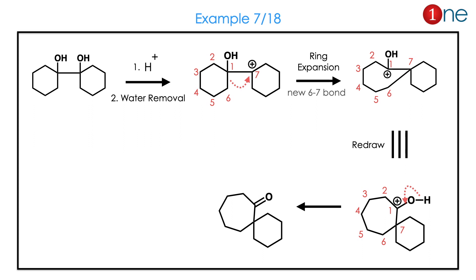Let us look at the next question. You have a diol attached to two 6-membered rings. The system is symmetrical, so water elimination and cation formation occur. The cation is quenched by ring expansion to form a 7-membered ring. The 6-membered ring becomes a 7-membered ring, and you have a new 7- and 6-membered ring system with the ketone.